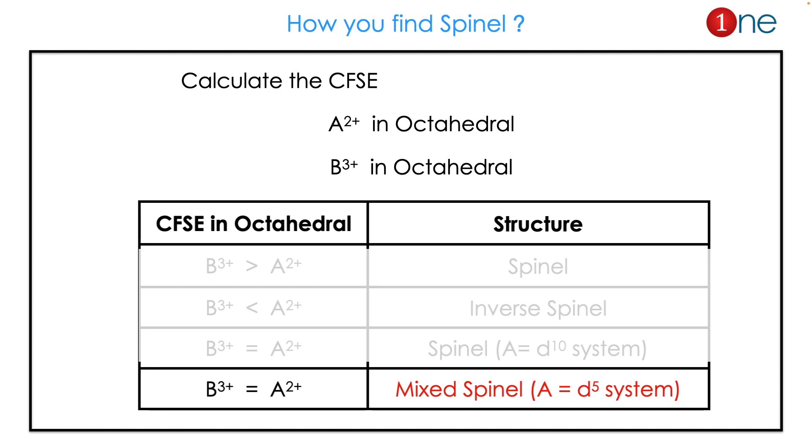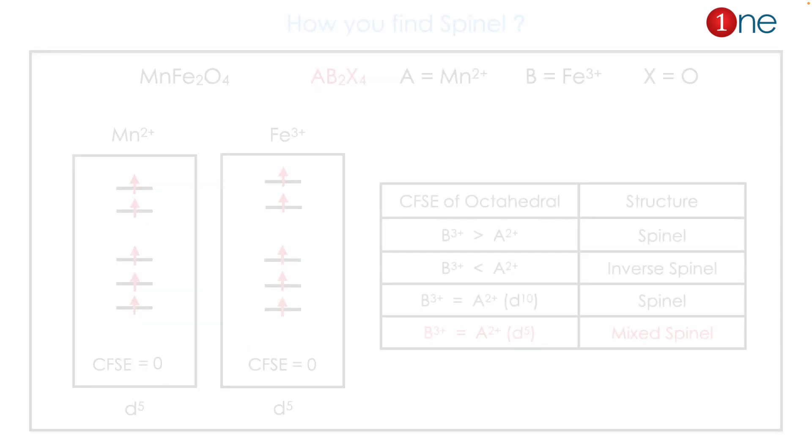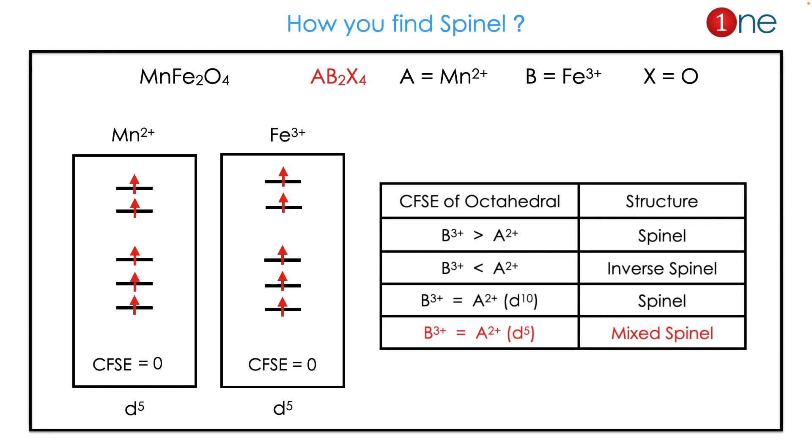Here I give an example to learn, which is MnFe2O4, where Mn2+ is d5 system, Fe3+ also d5 system. If you calculate CFSE both will be zero, so it should be spinel or mixed spinel. Since the systems are d5 system, it's a mixed spinel structure.